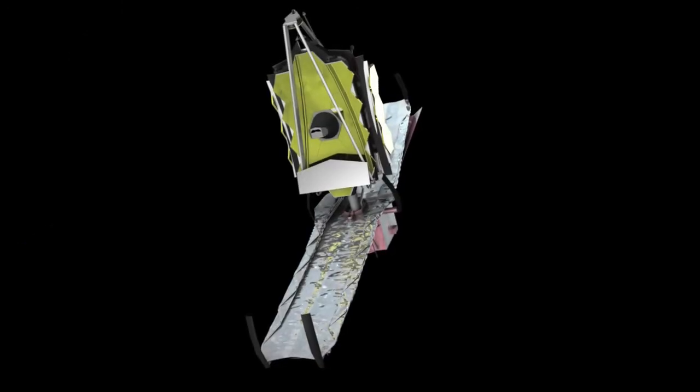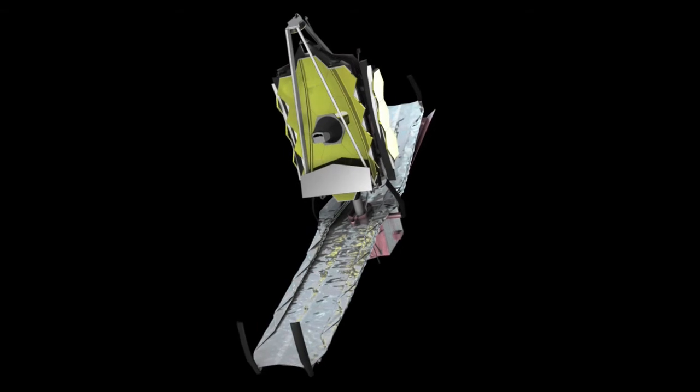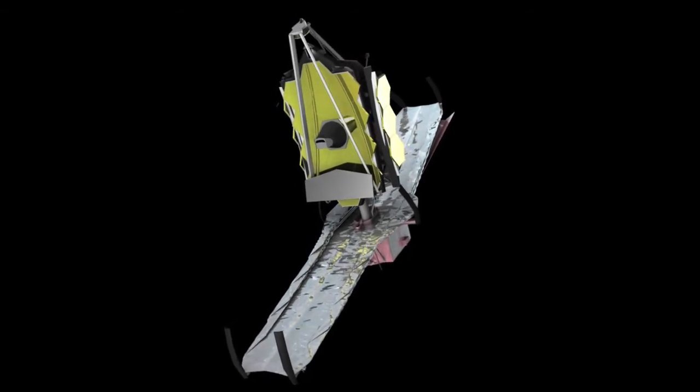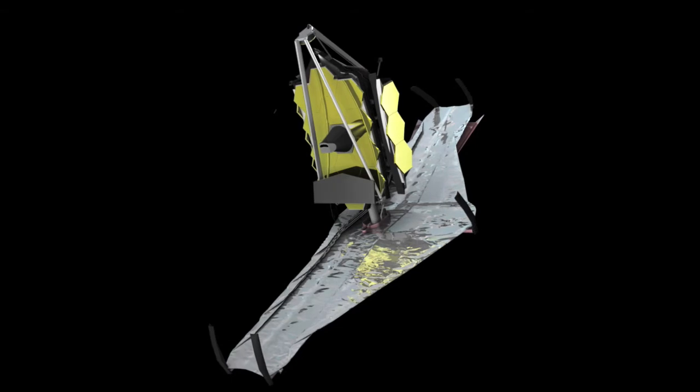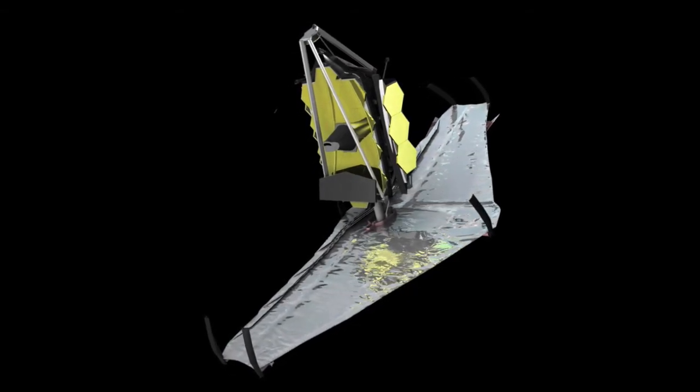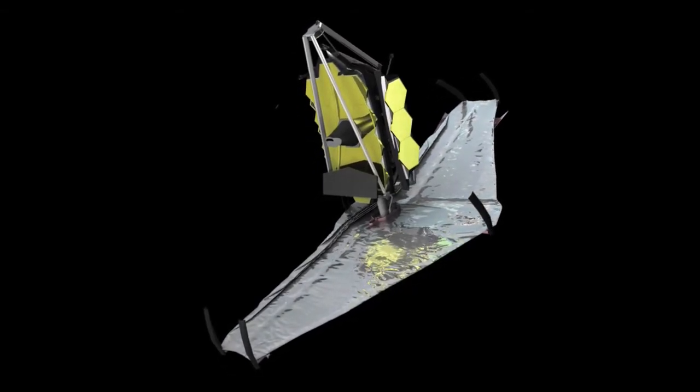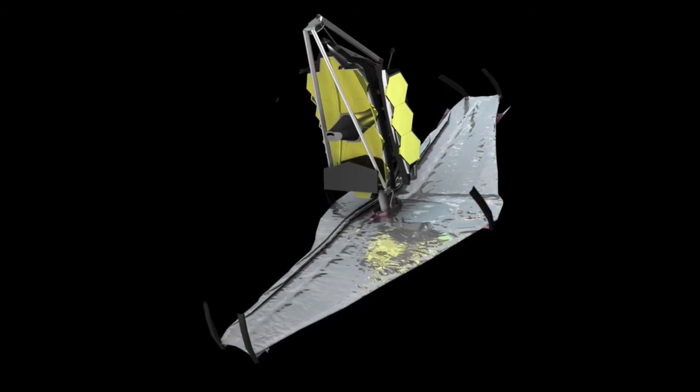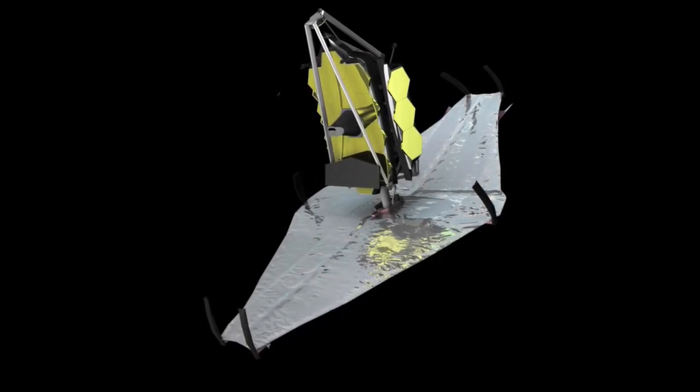During its journey of one and a half million kilometers to L2, the James Webb Space Telescope will be fully deployed. Once the communication antenna and solar arrays have unfolded, the giant sunshield will open out, exposing the folded mirror.